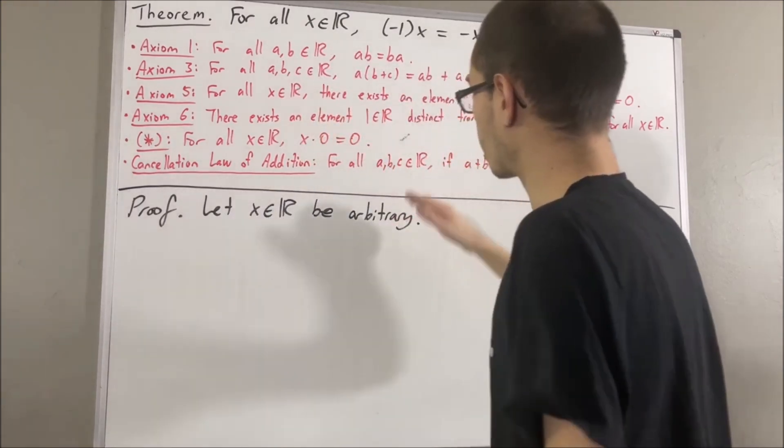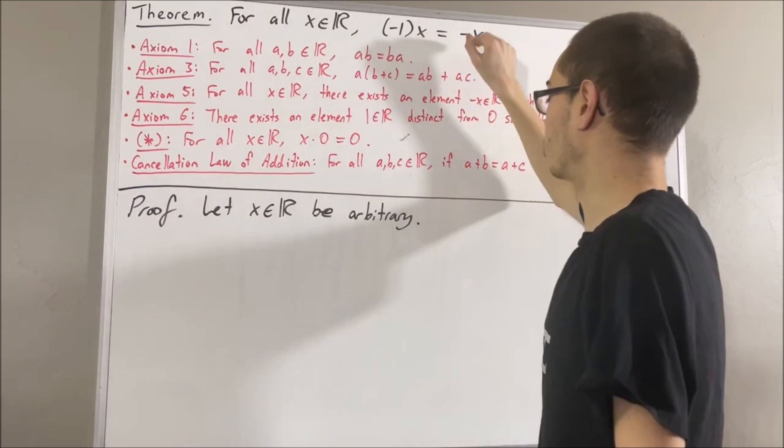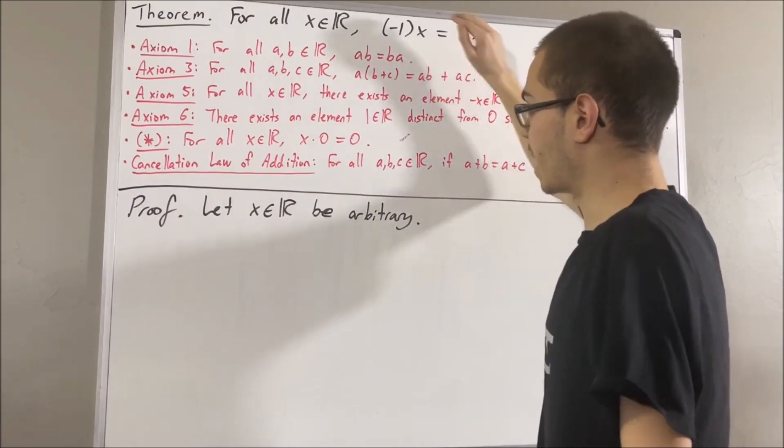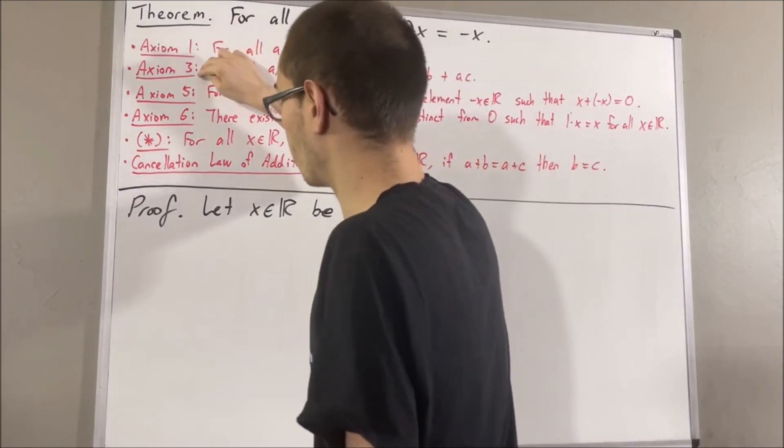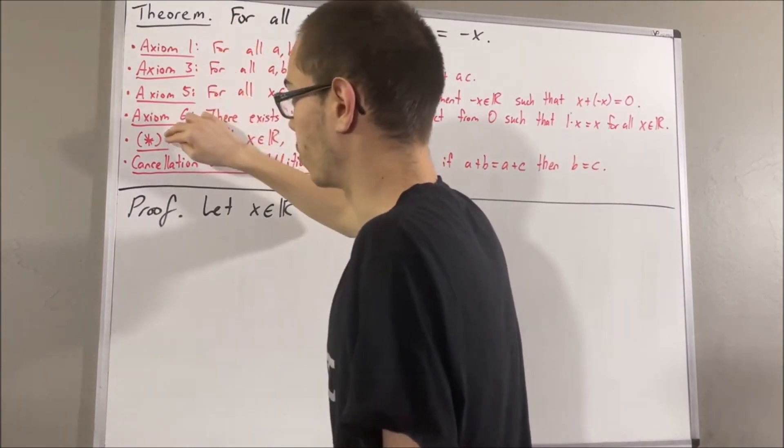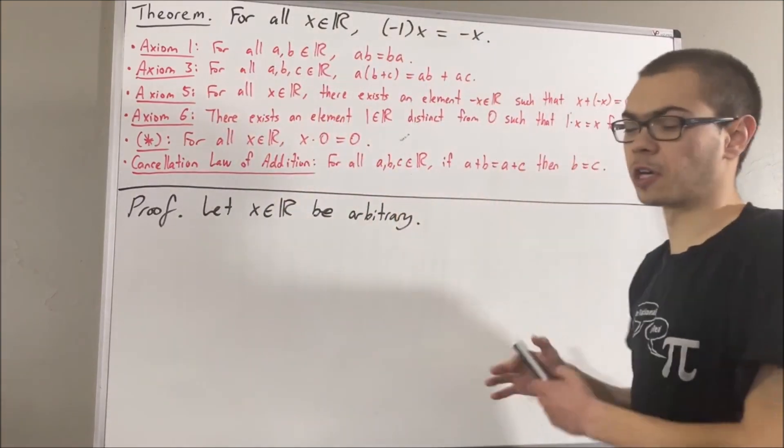From here, we want to show that negative 1 times x is equal to the negative of x. And to show this, we apply axioms 1, 3, 5, and 6, and we apply star. The observation is as follows.